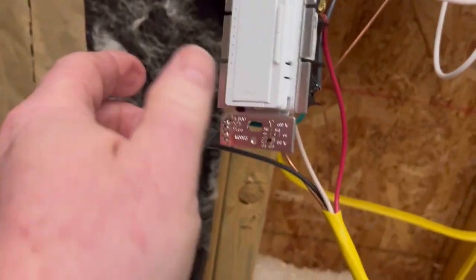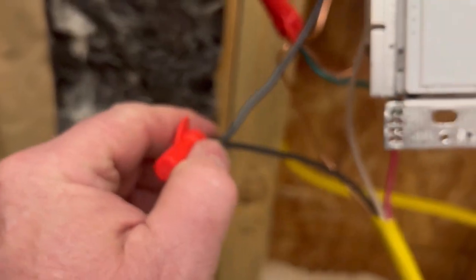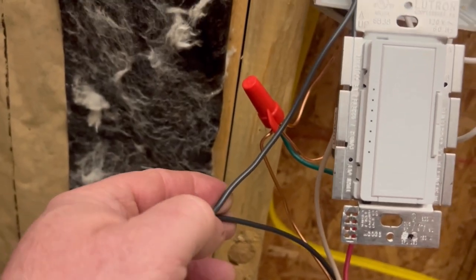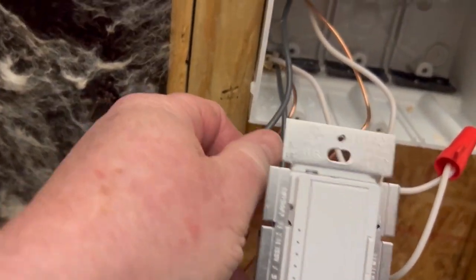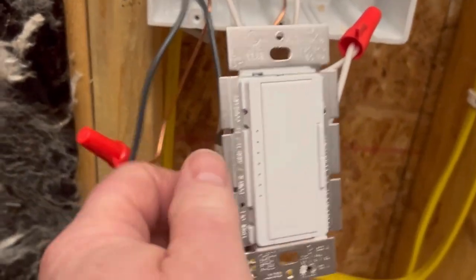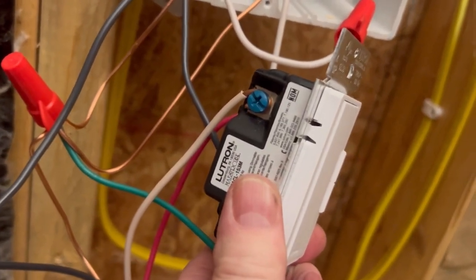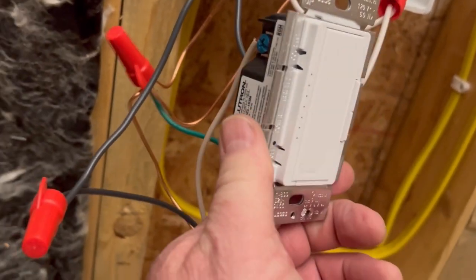And then from the last switch, notice that I got the black wire coming out, it's going into that cable, gets wire-nutted to the black wire that then goes back to your first switch. And then that guy is wire-nutted to the black wire that goes up to your lights.